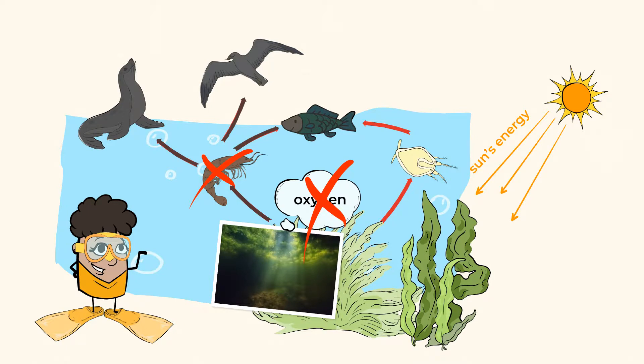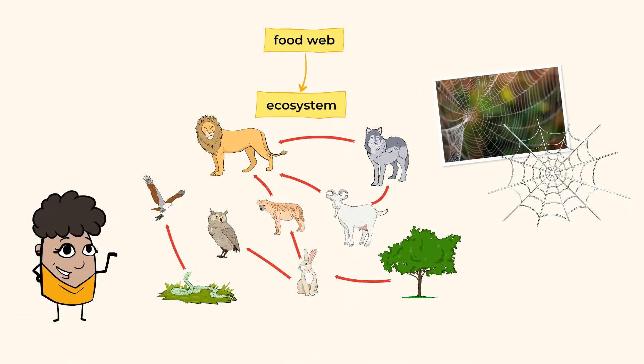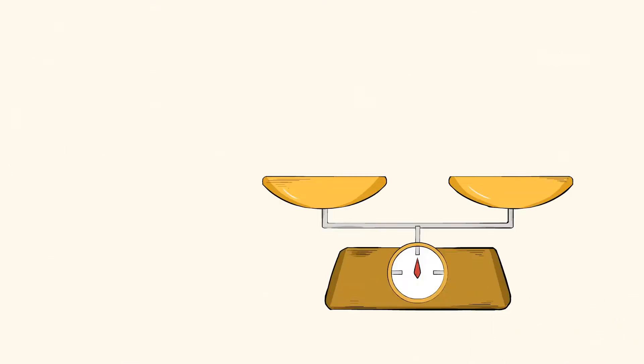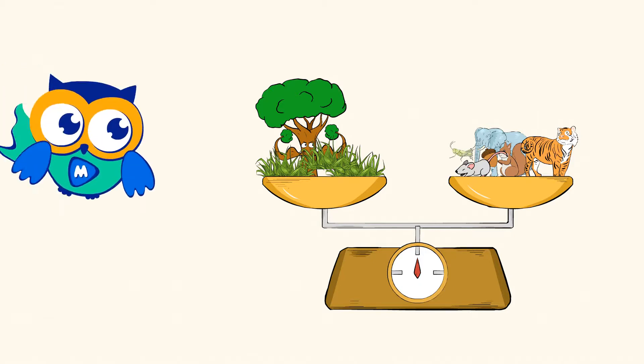So, my mighty scientists, as you can see, a food web is a group of food chains, all very well connected. A balance between producer plants and consumer animals is very, very important to have a strong ecosystem.